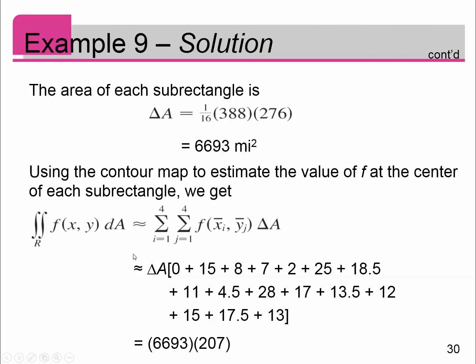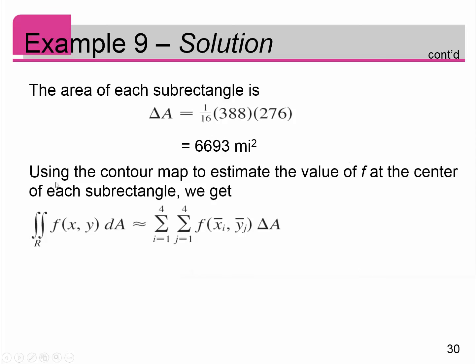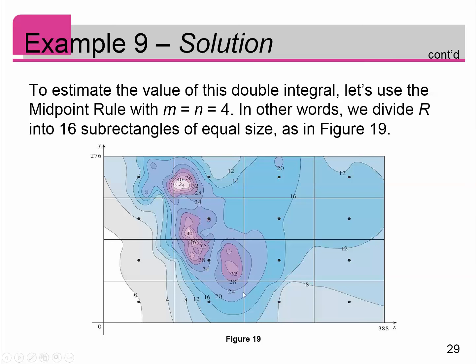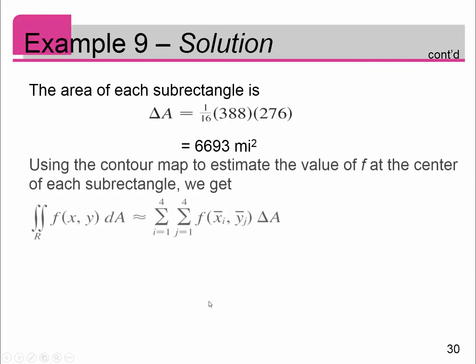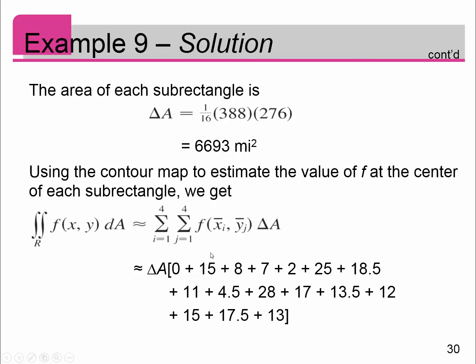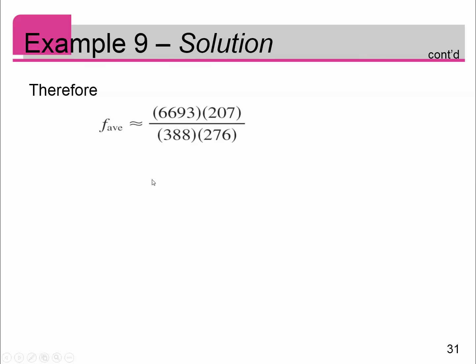This zero right here is what I get on the previous slide. There's zero snowfall right there. This one was close to 16, so 15. Then I just kept going for all 16 of them. Add that all up, I got 207 times the delta A, which we know is 6,693. That's my double integral, this numerator right here.